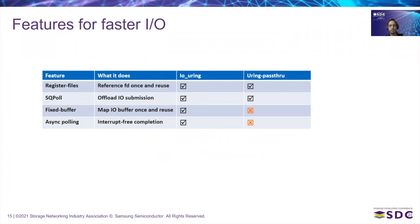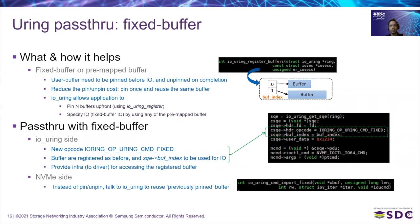io_uring has features beyond async IO to make IO faster. These include: register file, which reduces the cost of acquiring and releasing file references inside the kernel; SQPoll, which enables applications to submit IO without doing a system call at all; fixed buffer; and async polling. The first two — register file and SQPoll — become available with the infrastructure discussed in previous slides. The other two require new plumbing both at the io_uring and NVMe driver levels. We start with fixed buffer support for uring pass-through.